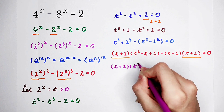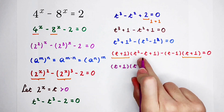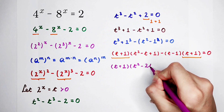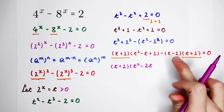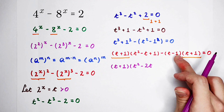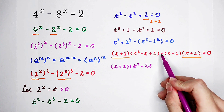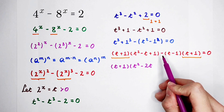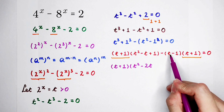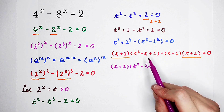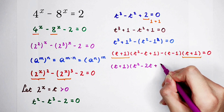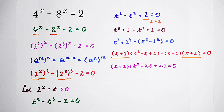Taking out (t + 1), we get (t + 1) times (t² − t + 1 − (t − 1)) equals 0, which simplifies to (t + 1)(t² − 2t + 2) equals 0. Be careful: because there is a minus sign in front of the bracket, the signs inside must be changed — plus becomes minus and minus becomes plus. So plus 1 and plus 1 gives plus 2.